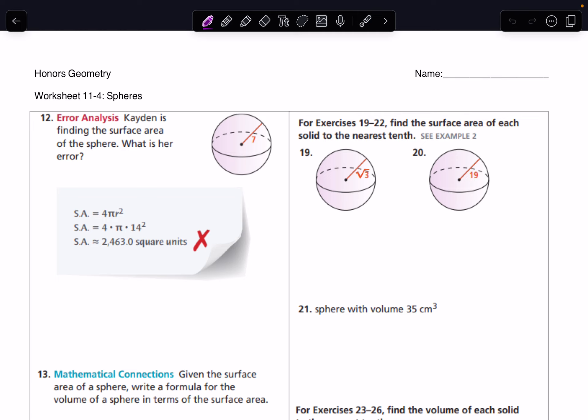So let's start with this one here, number 12. Caden is finding the surface area of the sphere. What is her error? When she was finding the surface area with 4πr², she used 14 for the radius, when really 7 is supposed to be the radius. So she actually used the diameter instead of the radius.